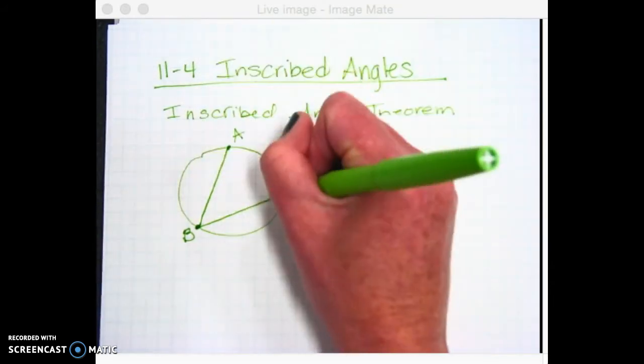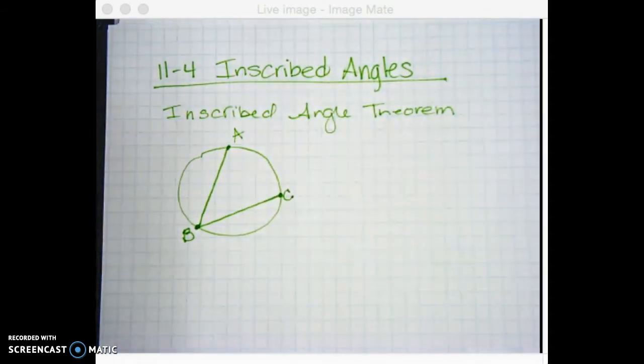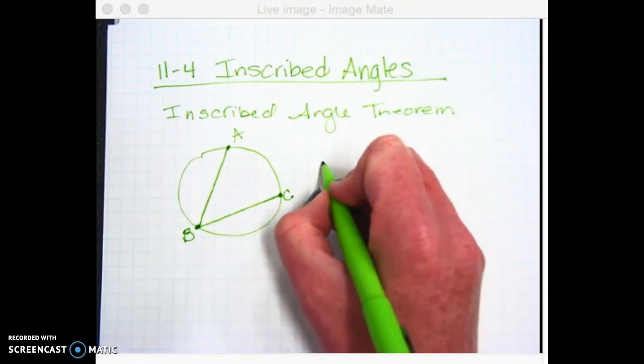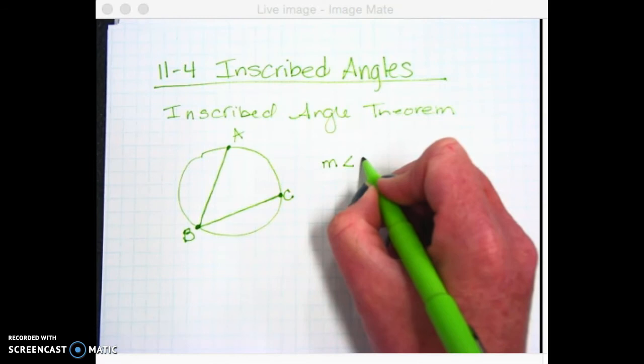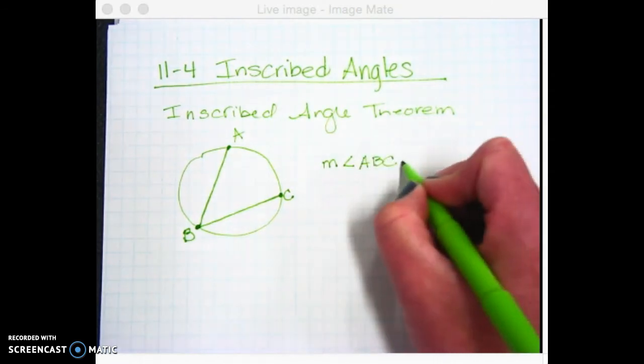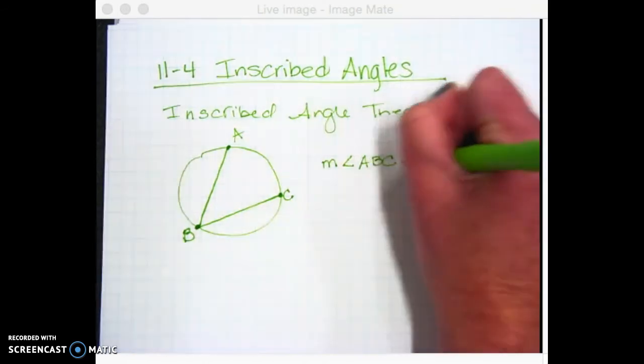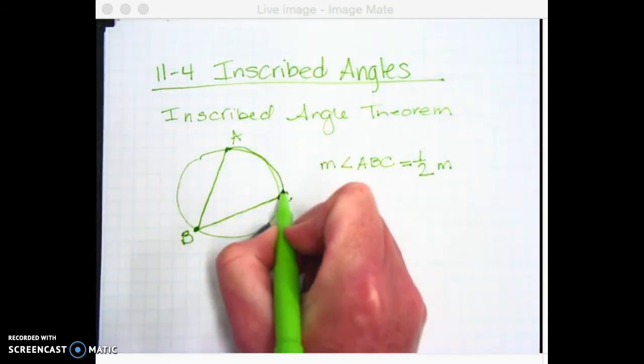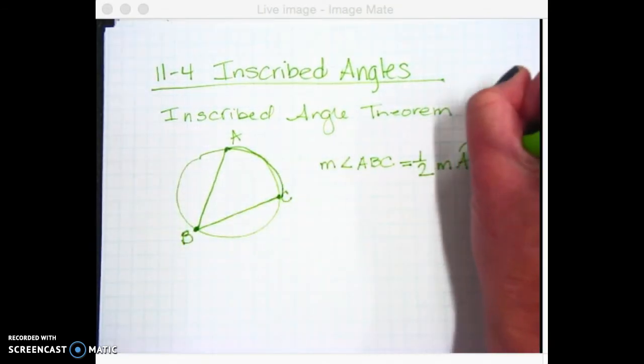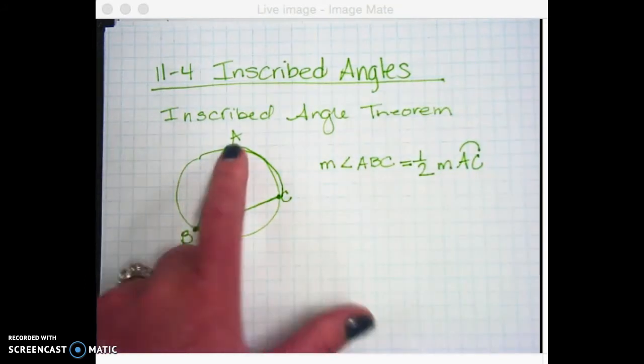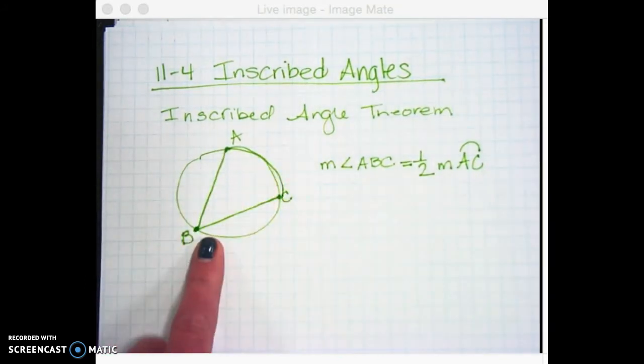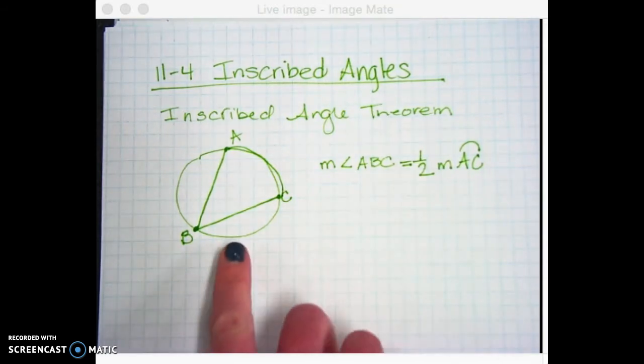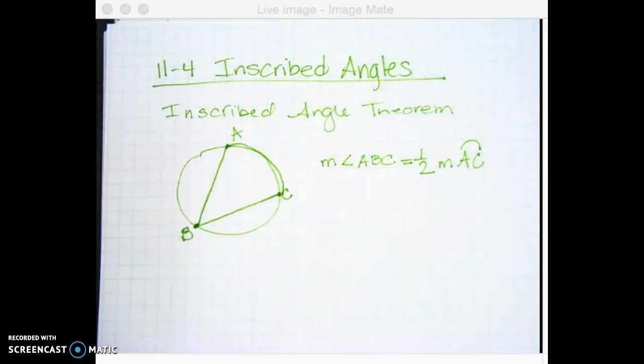And we'll call this arc AC. So this theorem says that the measure of angle ABC is equal to half of whatever that arc is. It's the measure of arc from here to here, AC. So if you start at the arc and you go down to the angle, you're going to take half. Works the other way too. If you're going from the angle to the arc, you want to double it.